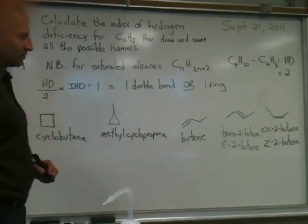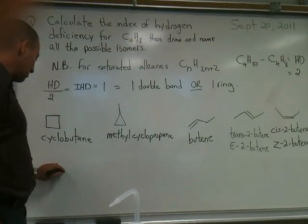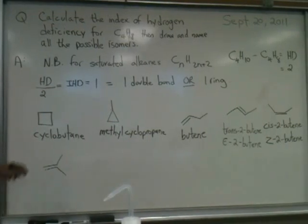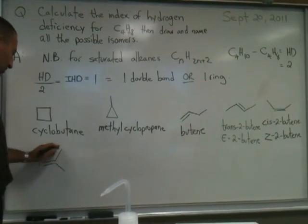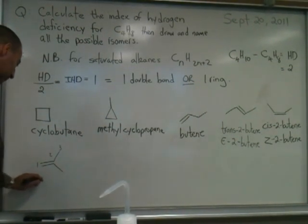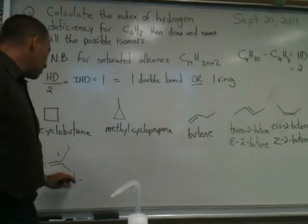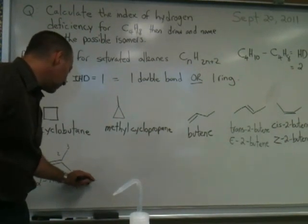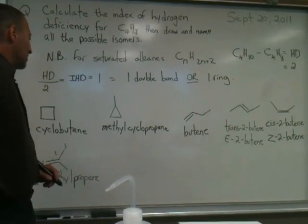Have we exhausted all our possibilities for butene? No — there is one more possibility: putting both methyl groups on the same carbon of the double bond. Then you would name it as a propene. If you start numbering from there, that would be called 2-methylpropene. And I think that exhausts all the possibilities for C4H8 — there are only six isomers.